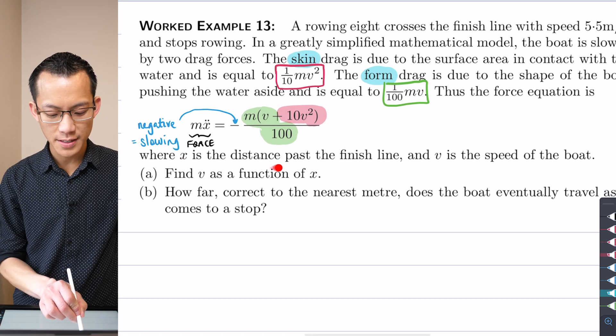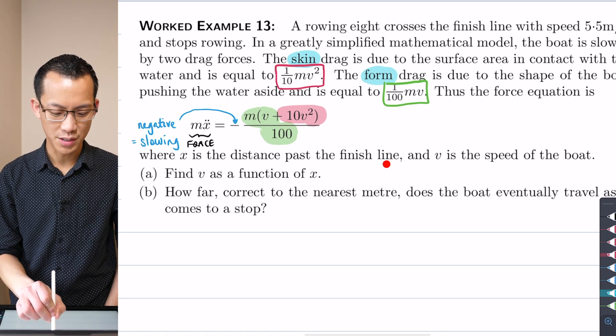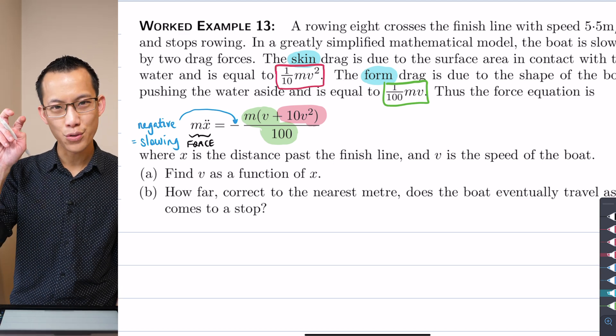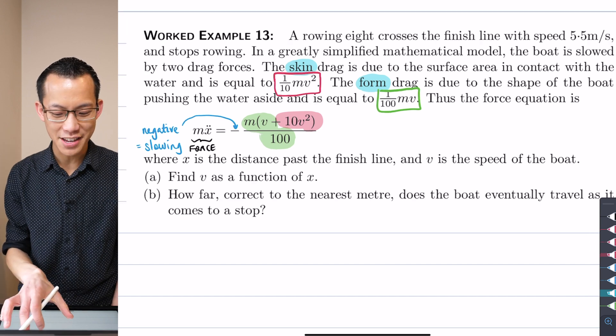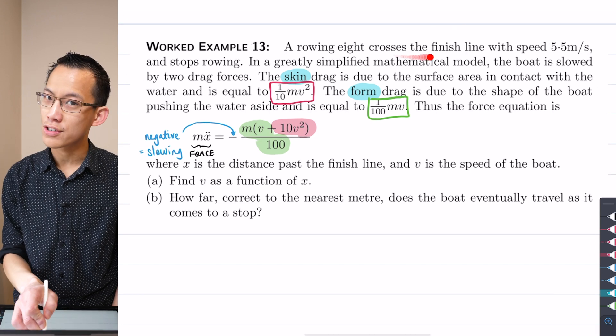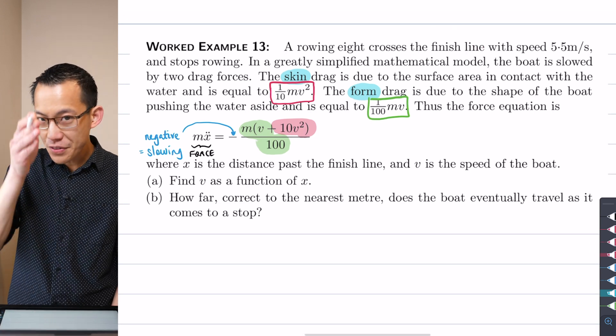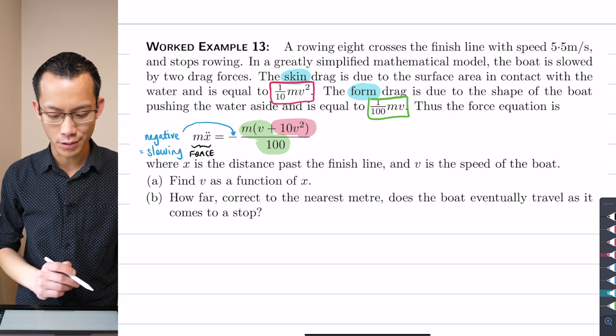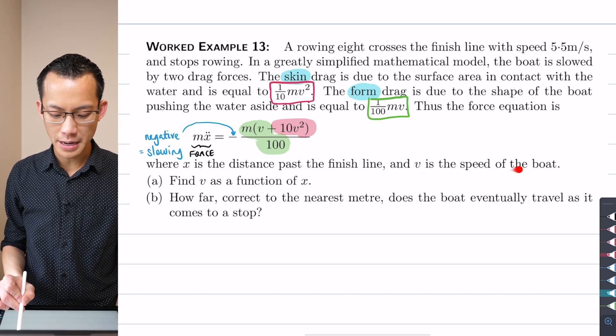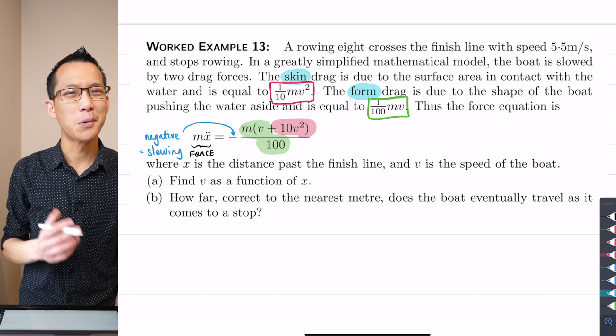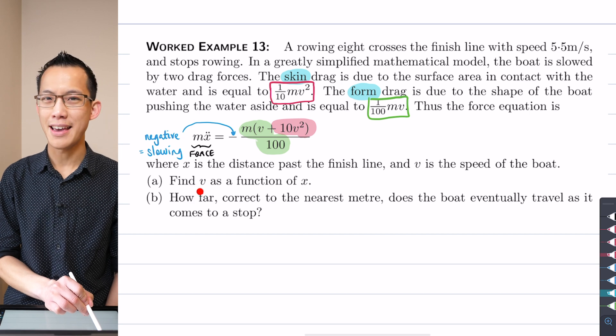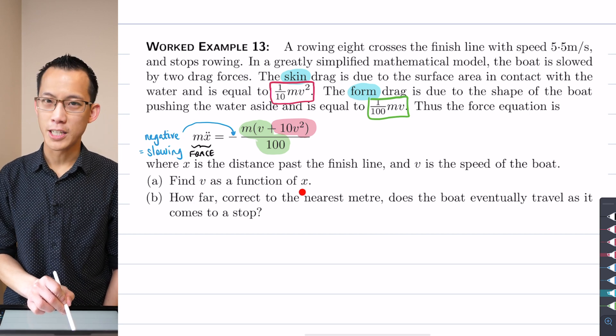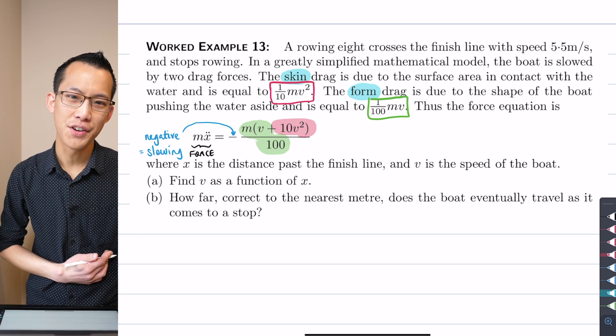And X is given as the distance past the finish line. So in some ways, you could call this the initial condition, even though the entire race has been going, but we're just interested in what happens after you cross the finish line. So X equals zero is the finish line. And then as X gets bigger, you go further and further along. Then V is the speed of the boat. All right, so what do we do with this? Well, firstly, part A, we want to find the velocity as a function of displacement, V as a function of X.